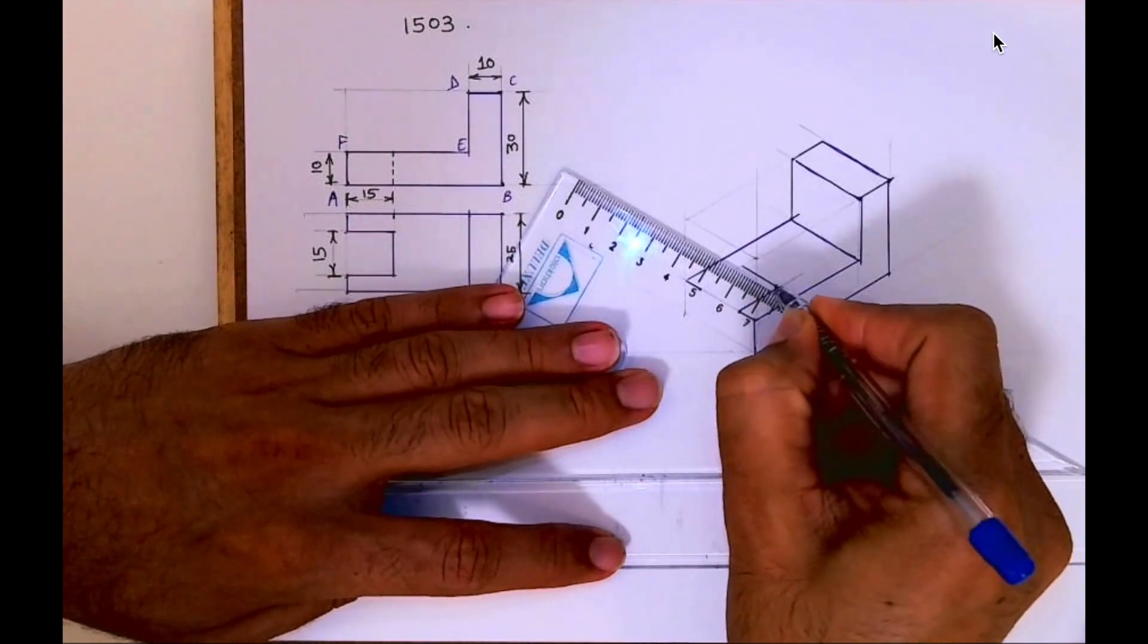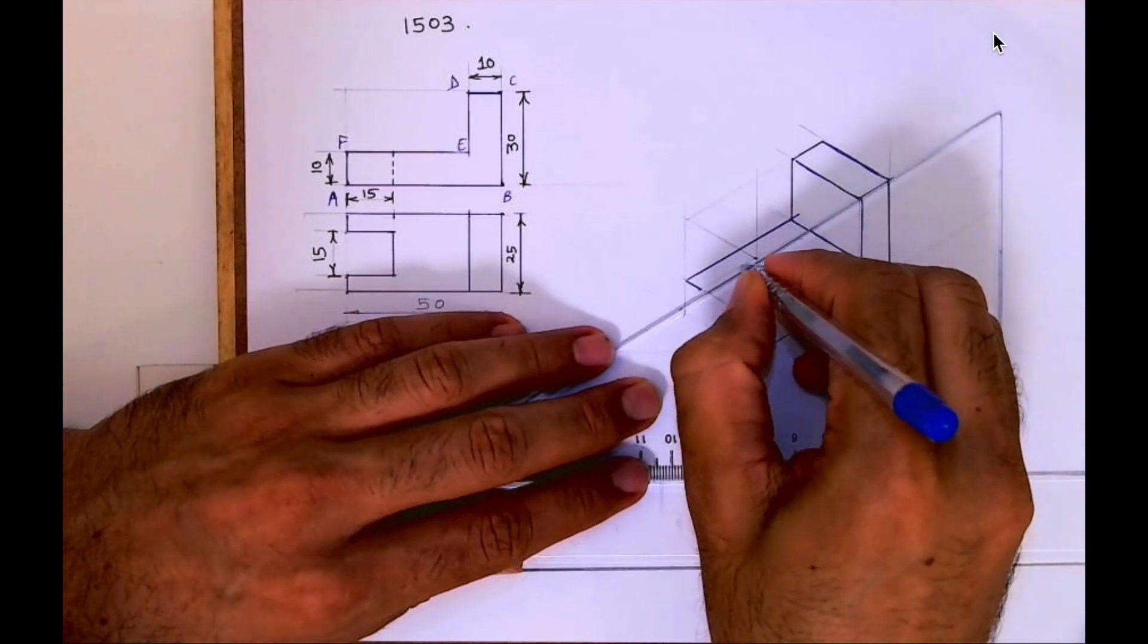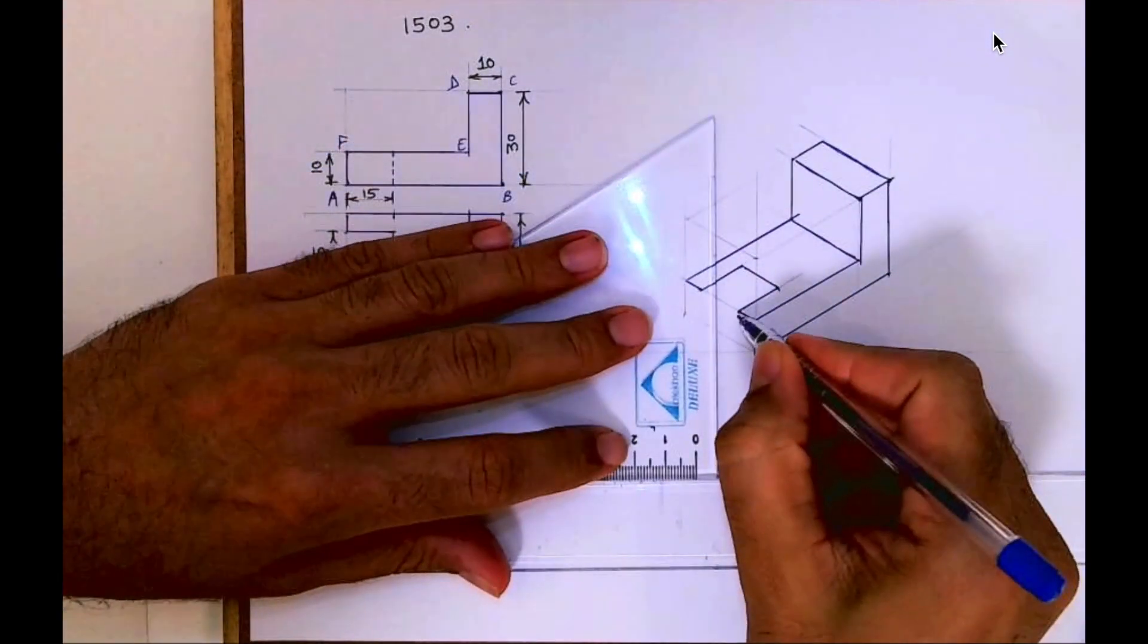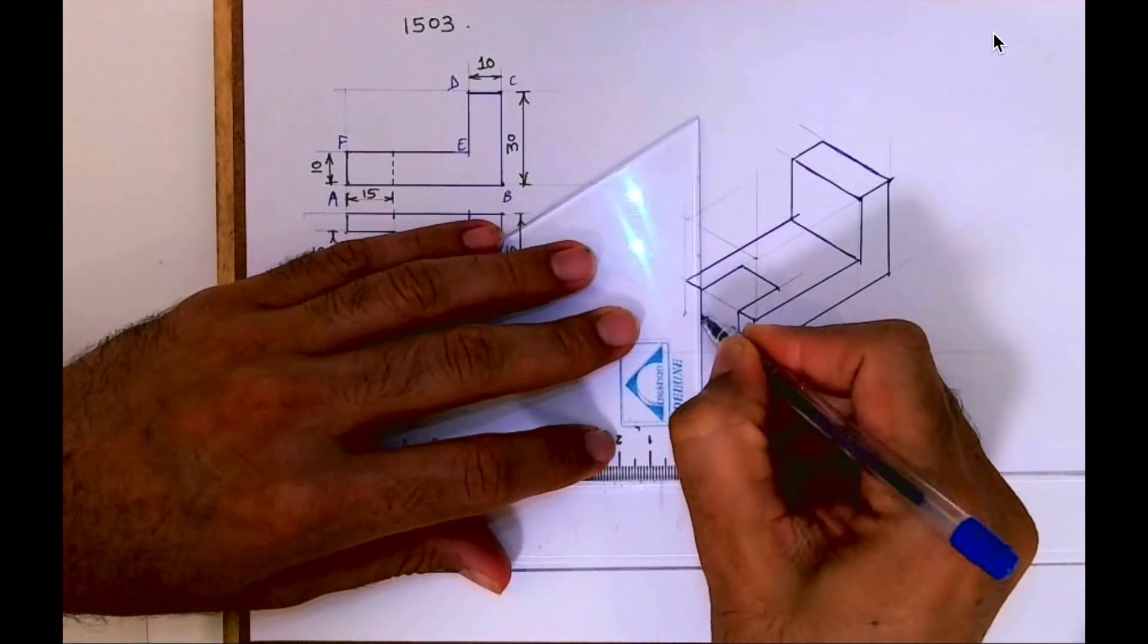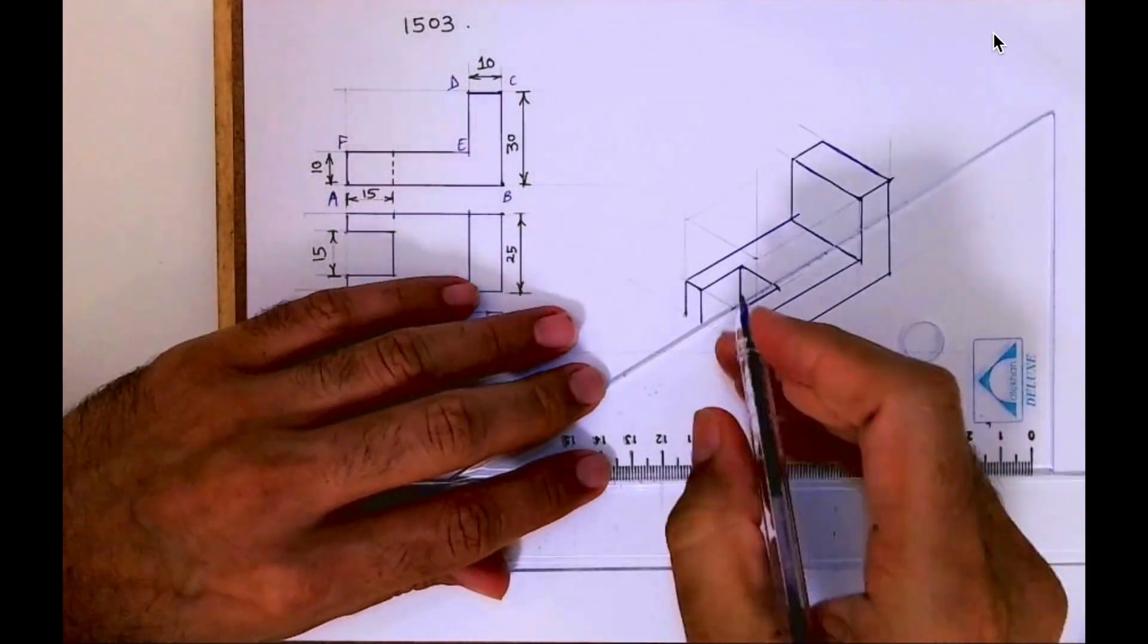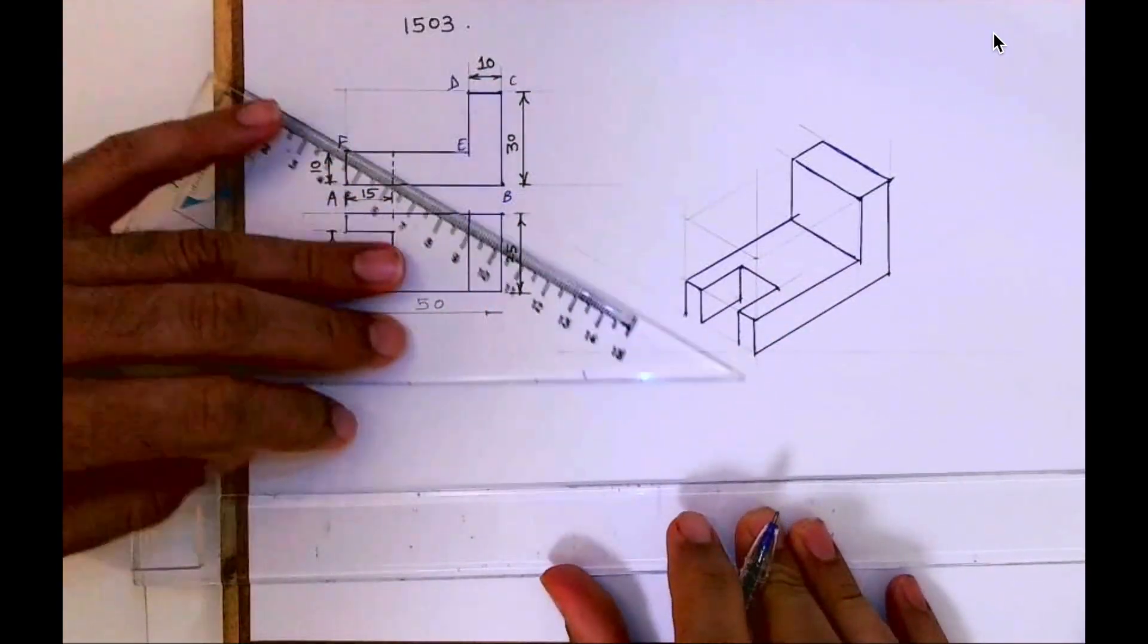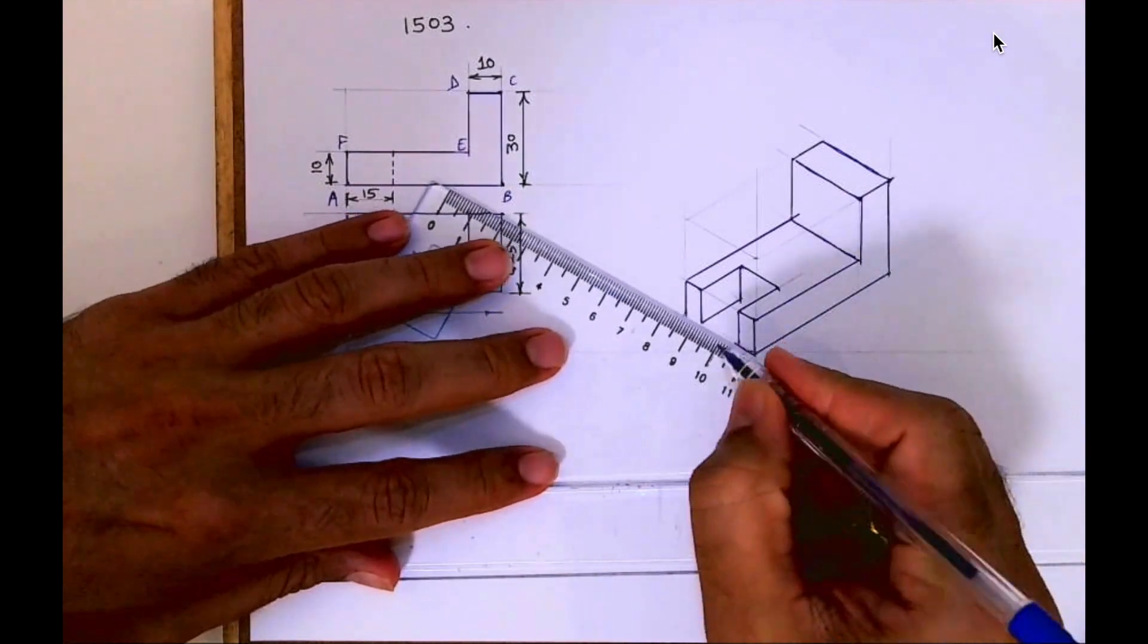From here we'll draw a line and mark 15 here, so we'll get this C-shape. Now we have to take this down—how much down? 10. So take all the points down by 10, and then draw this line. By doing this you'll complete the problem.